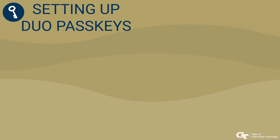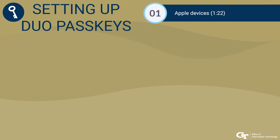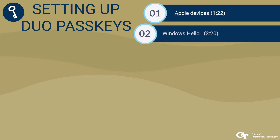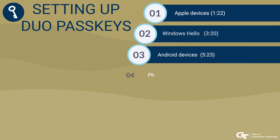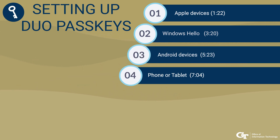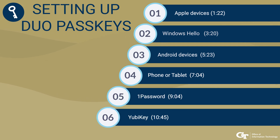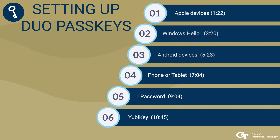We will provide instructions for setting up dual pass keys on Apple devices, Windows Hello, Android devices, phone or tablet, and 1Password and YubiKey. If you would like to skip ahead to the device that you are adding a pass key to, please utilize the provided timestamps. Now let's go through the steps to add a pass key to your device.